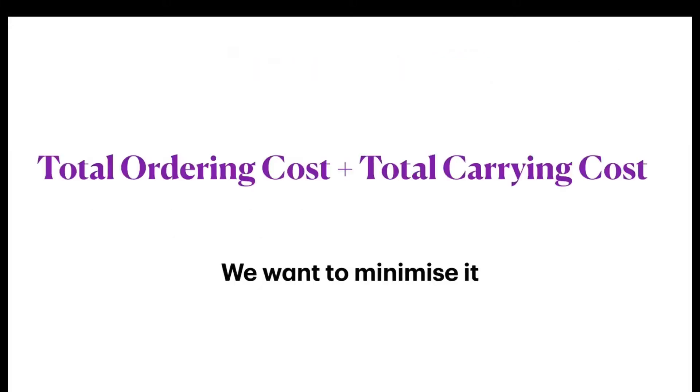The demand is known and constant, whatever is your demand. Then the lead time is known and constant. Lead time is the time difference between the time when we order and the time when we receive the order. We assume that quantity discounts are given by the supplier but we are not availing them, and the concept of stockouts and shortages are not at all considered in the calculation of EOQ.